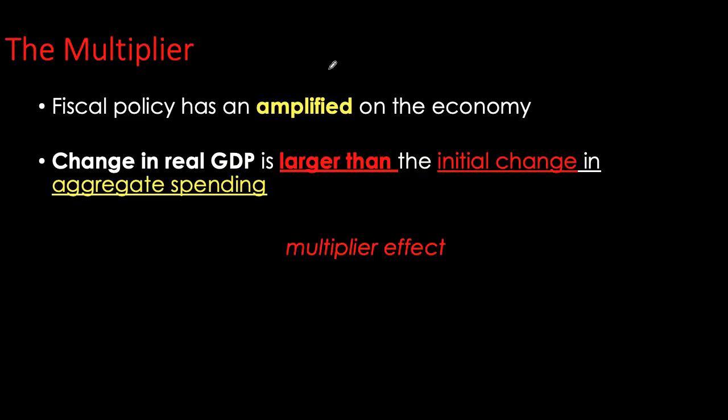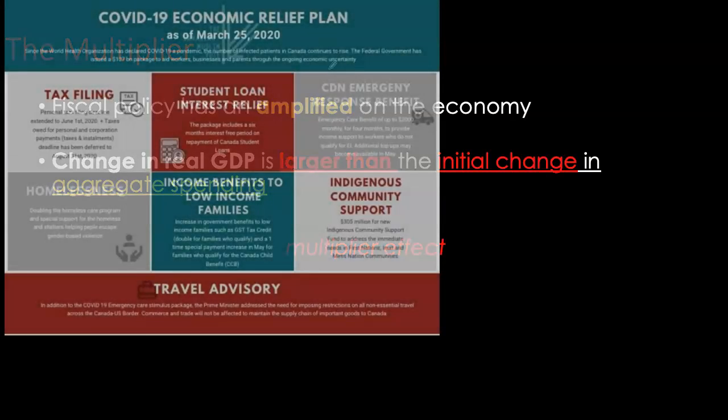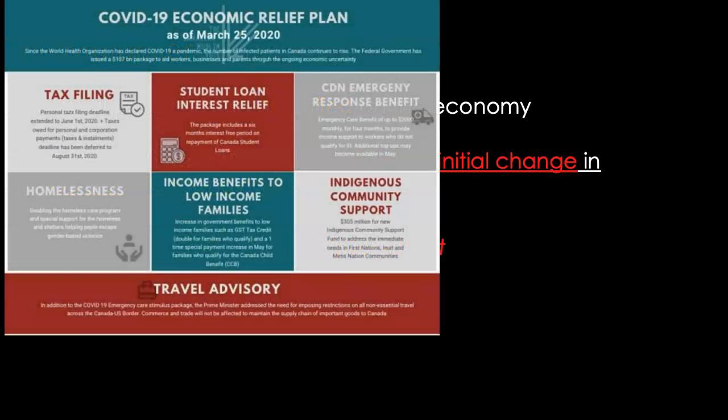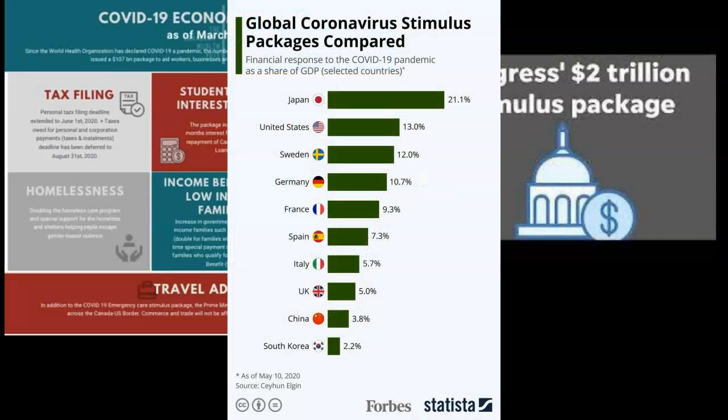Proponents argue the multiplier is always equal to or greater than one, while critics argue that any increase in government spending is completely offset by a decrease in private investment — the crowding out effect from the loanable funds market. However, our experience from the Great Depression and the 2008–2009 financial crisis tells us the multiplier more often than not is equal to or greater than one. Most recently, we saw massive government bailouts during the COVID-19 global pandemic in the US, Canada, UK, and across the globe.